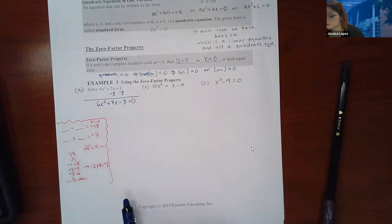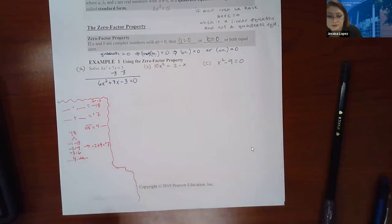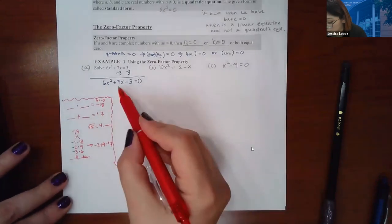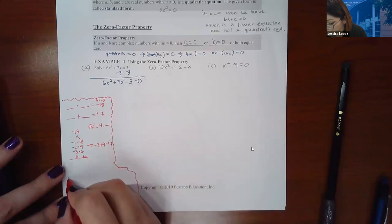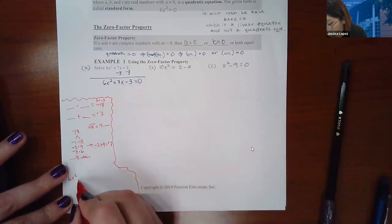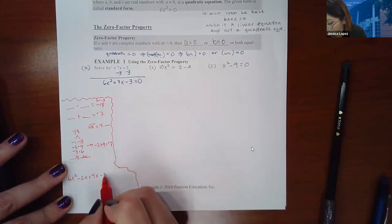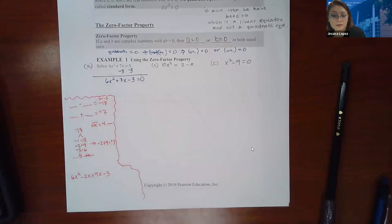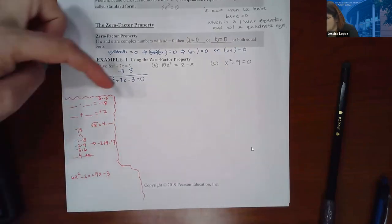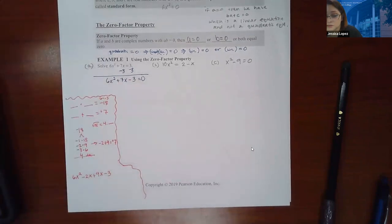That's just my side work to figure out the magic numbers. Now we have to actually factor this thing. I'm going to split this using those magic numbers: 6x² stays the same, and instead of 7x I'm going to have negative 2x and positive 9x, and then I write the last term, minus 3. This is equivalent to the original — if I combined those two middle terms it would be the same thing.